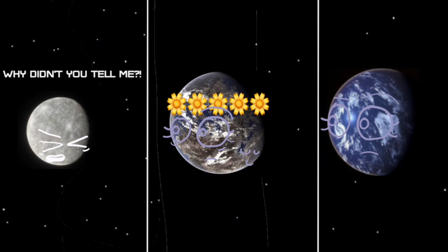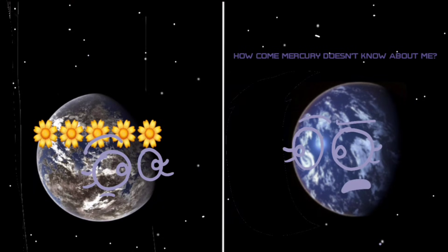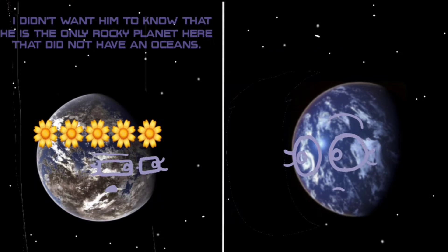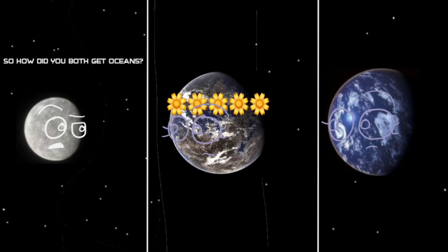Why didn't you tell me? How come Mercury doesn't know about me? I didn't want him to know that he is the only rocky planet here that doesn't have oceans. So how did both of you get oceans?